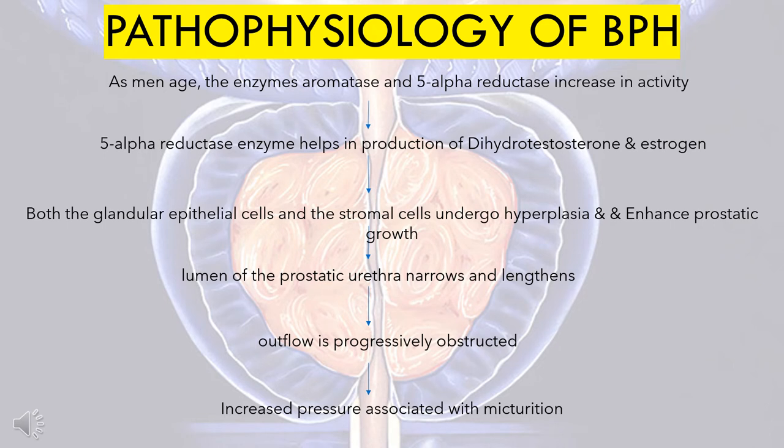Pathophysiology of benign prostatic hyperplasia. Due to factors like aging, the enzymes aromatase and 5-alpha reductase increase their activity. This 5-alpha reductase enzyme helps in the production of dihydrotestosterone and estrogen. Due to this, both glandular epithelial cells and the stromal cells undergo hyperplasia and will enhance prostatic growth.